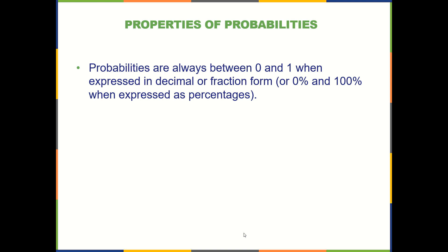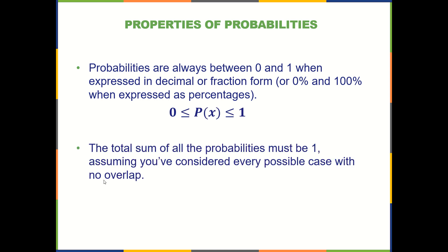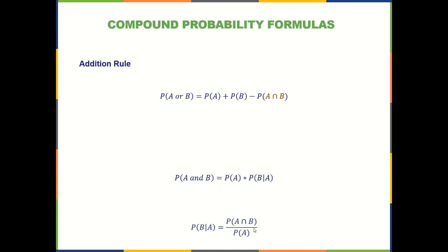In summary, probabilities are always between 0 and 1 in decimal or fraction form, or between 0% and 100% as percentages. A probability of 0 means impossible; a probability of 1 means certain. The total sum of all probabilities must equal 1, assuming you've considered every possible case with no overlap — meaning if you've considered everything and nothing twice, you're certain to get one of those outcomes. In the next video, we'll start to get into probability rules for compound events, and I'll see you over there.